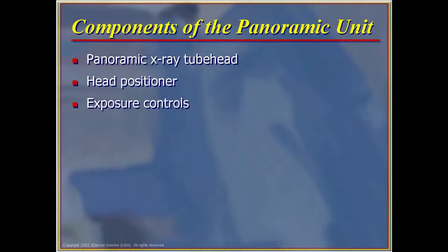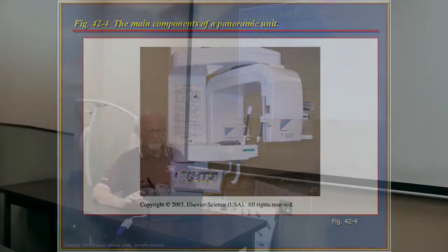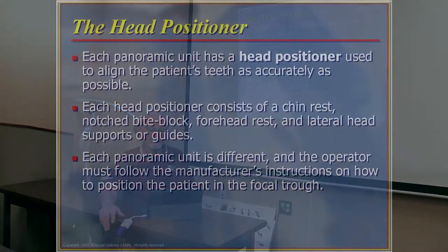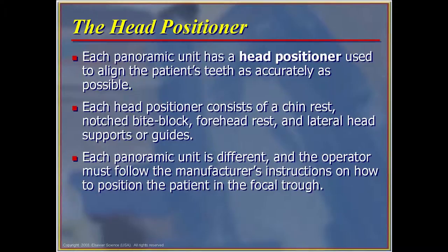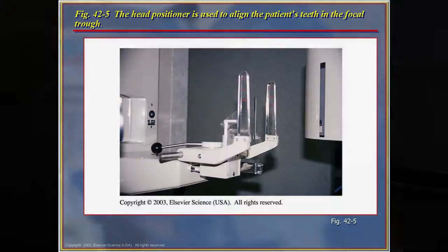The components of the panoramic unit include the x-ray tube head, the head positioner, and the exposure controls. The head positioner allows the patient's head to be positioned appropriately relative to the machine's directions. Each panoramic unit has a head positioner used to align the patient's teeth as accurately as possible. Each head positioner consists of a chin rest, a notch bite block for the patient to bite on, a forehead rest, and lateral head supports on both sides of the patient's head.